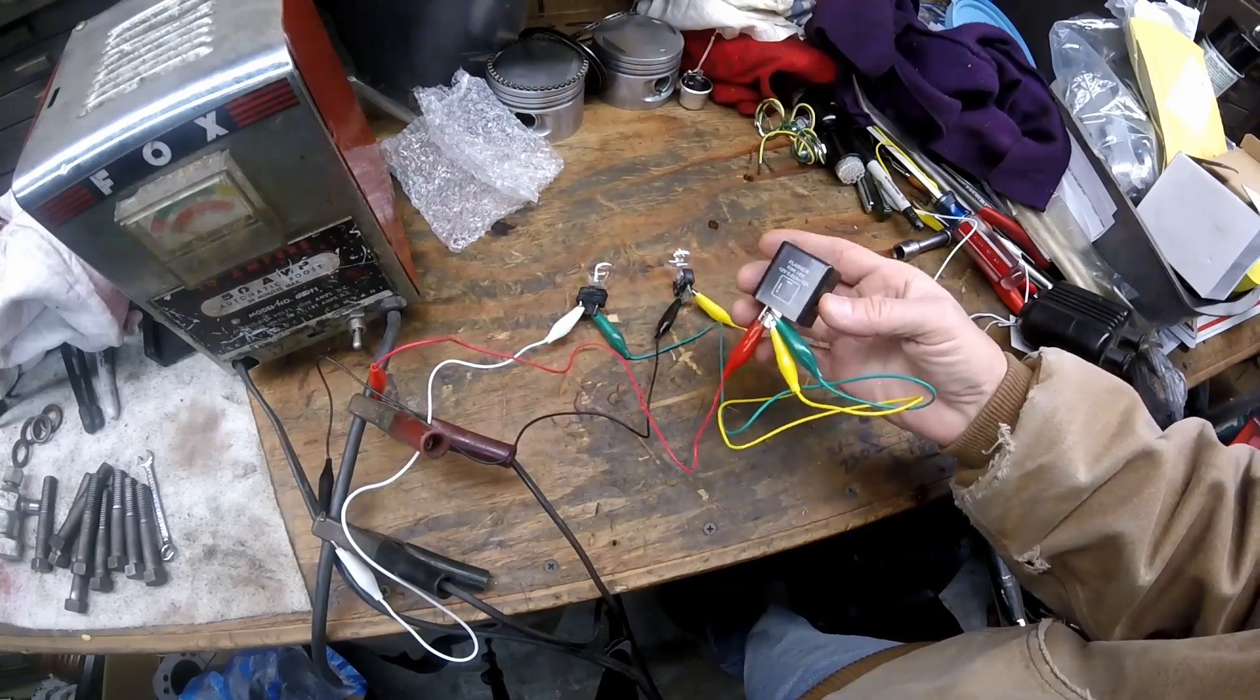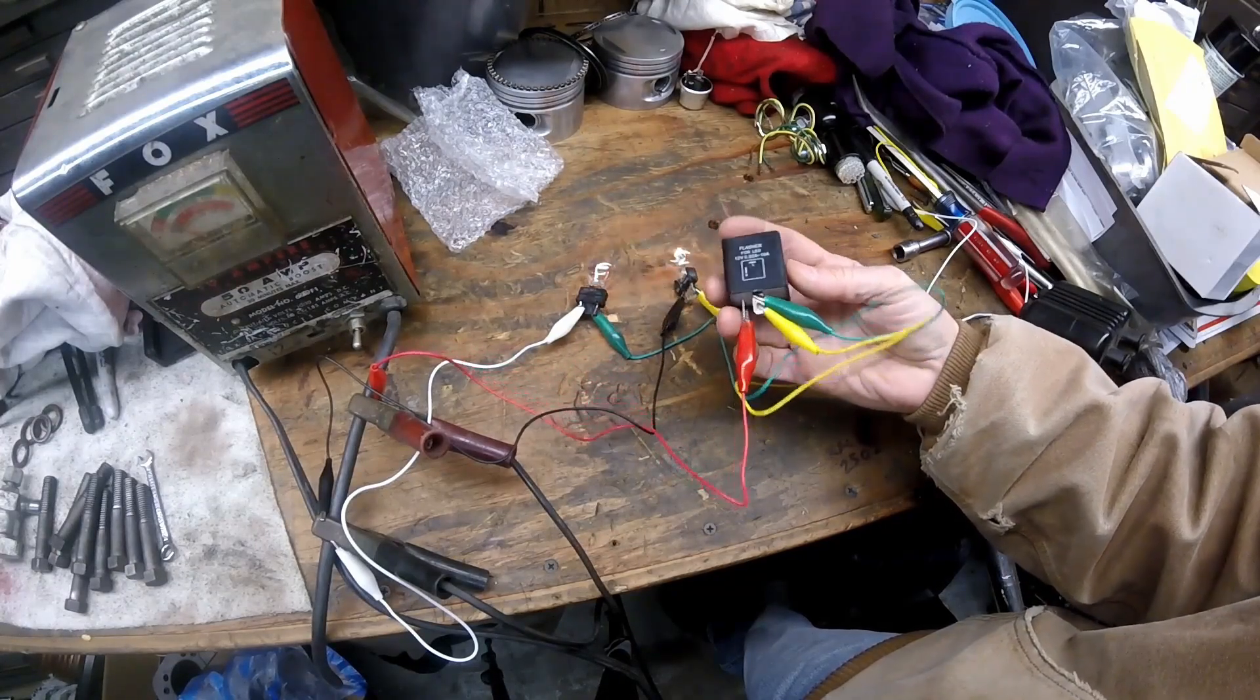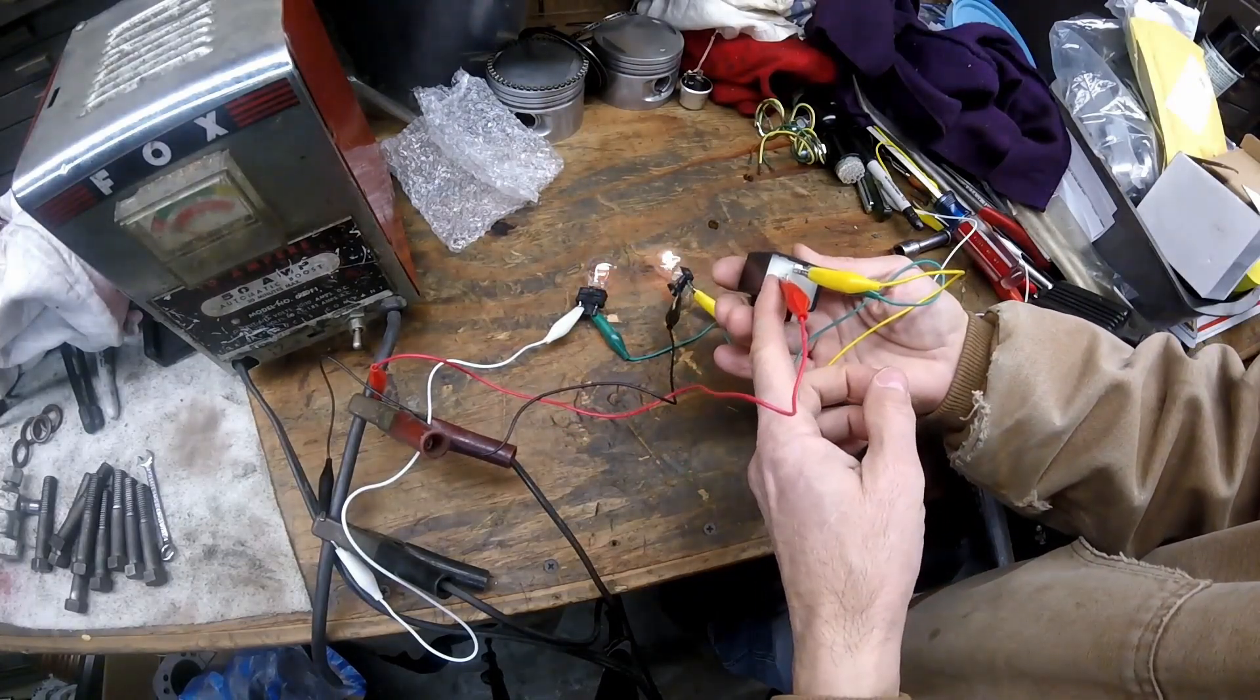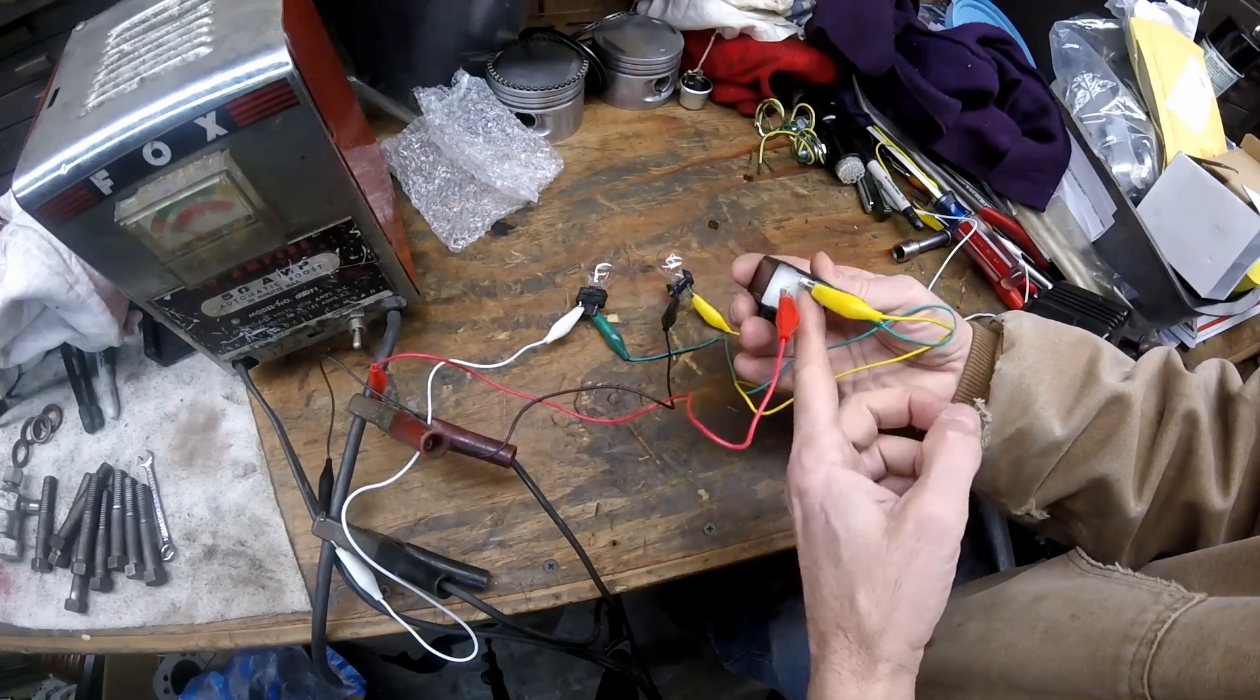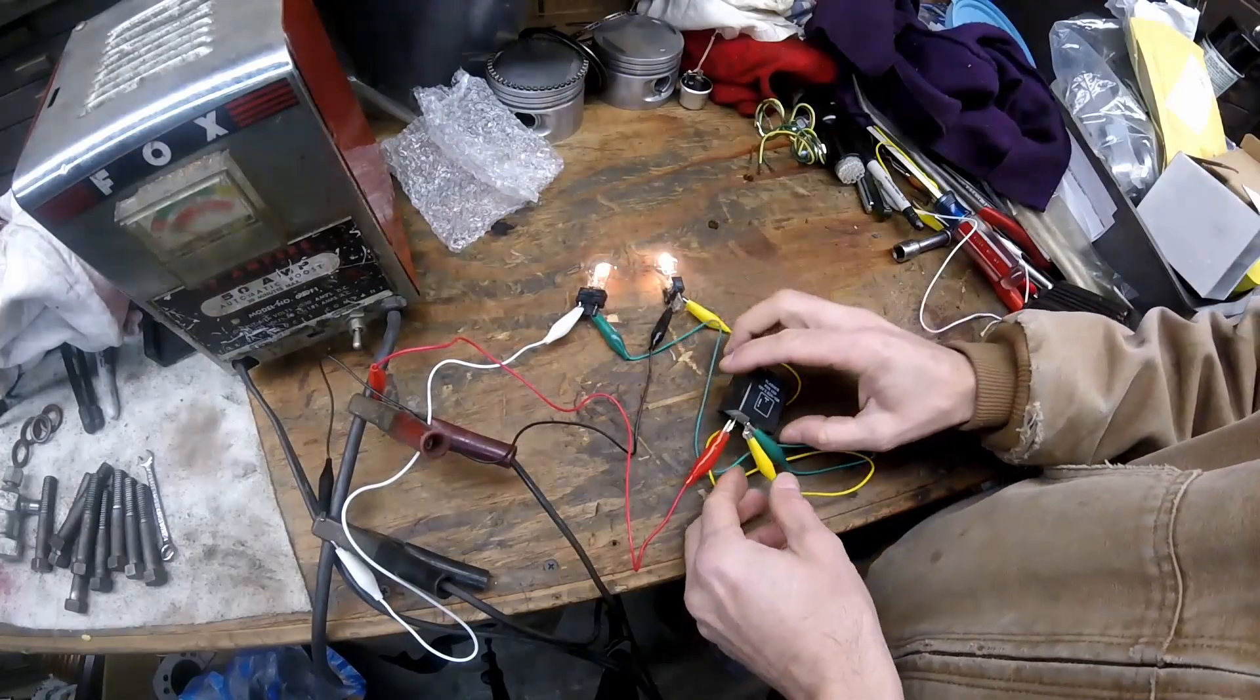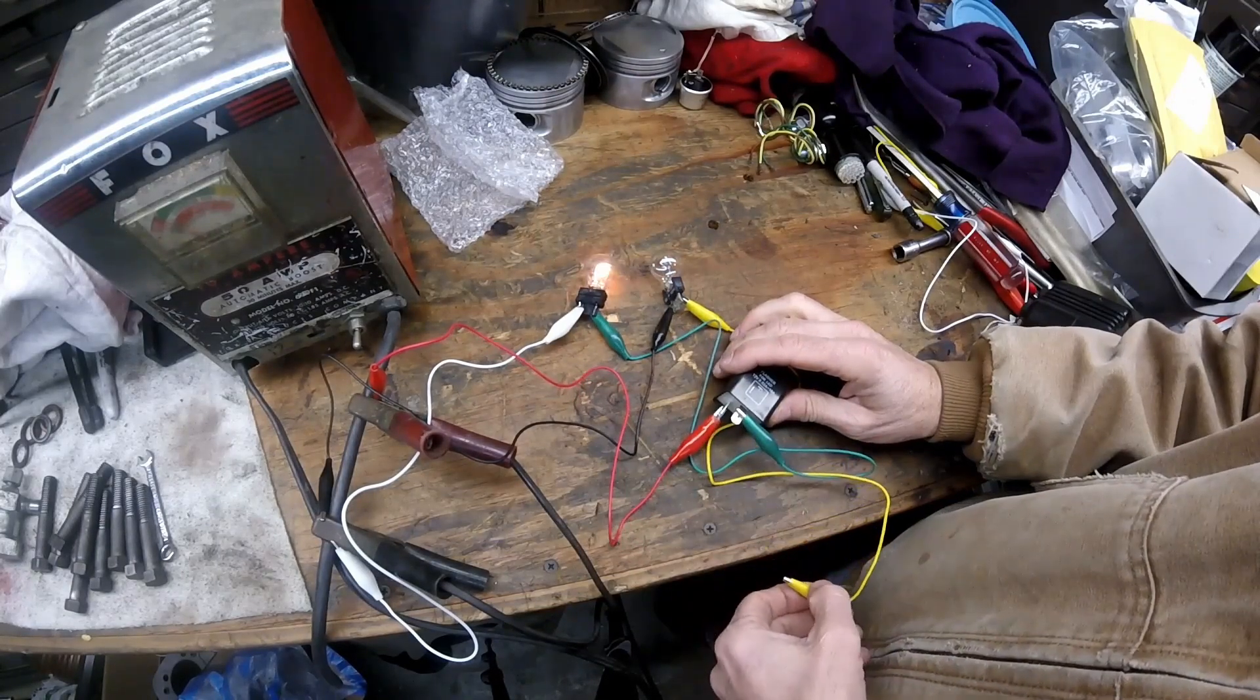So now I went to the electronic flasher relay that I got off of eBay. And it says for LEDs. Now it does have a B and an L. The B goes to the battery wire or the hot wire to 12 volts. And the L goes to the load, which is the bulbs. So now you see they're flashing and they're flashing at about the same rate. And if I take one of the bulbs off, it'll still stay flashing at the same rate.